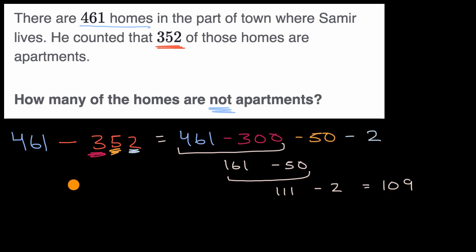But I mentioned there's many other ways that you might try to approach something like this. You could say, hey, maybe it's easier to subtract 350 than 352, and so you could subtract 2 from both of these numbers.